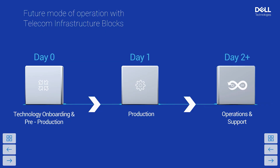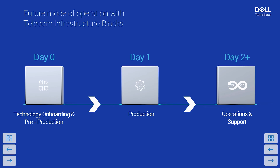Let's talk about how Dell and Red Hat work seamlessly and make deployment easy. We start with day zero — the technology onboarding and pre-production stage. CSPs, while starting their journey towards a disaggregated cloud-native network, spend an immense amount of time conducting research, doing benchmarking, conducting proof of concept, testing, and validation — all of which kills time to market.